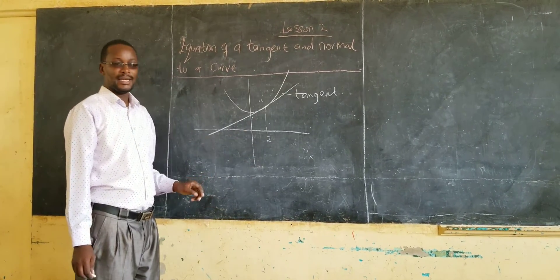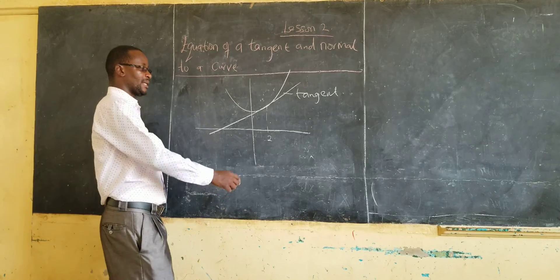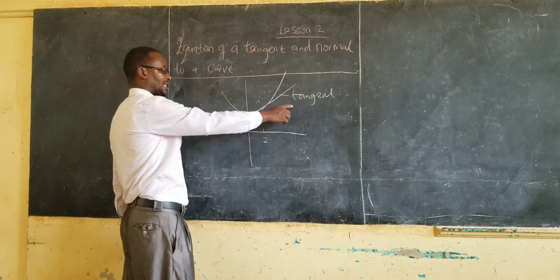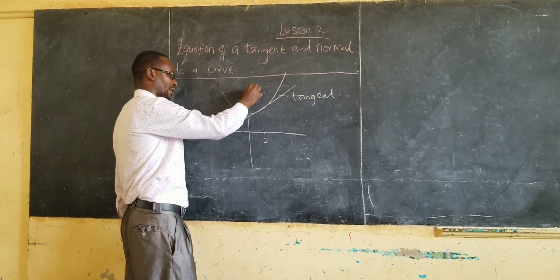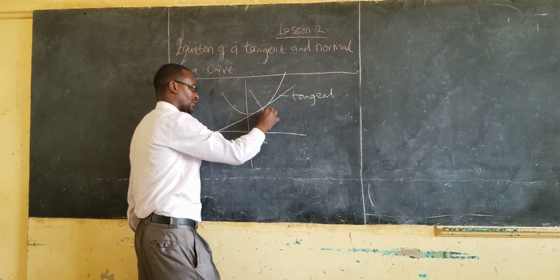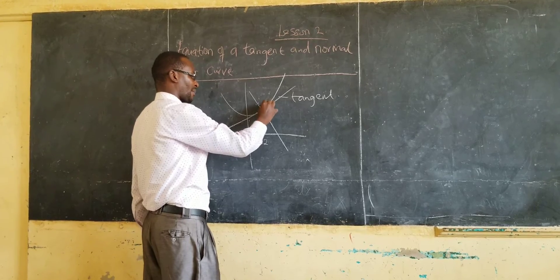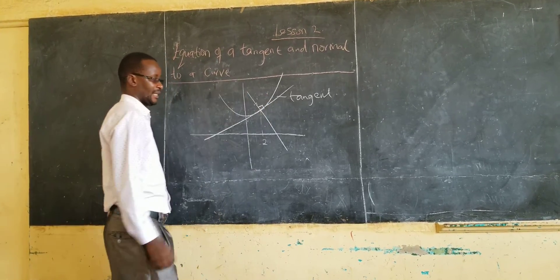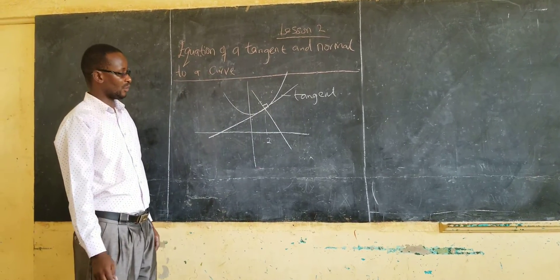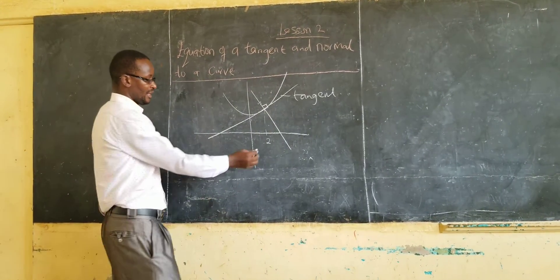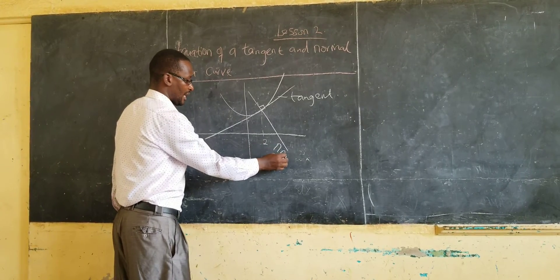A normal is a line which is perpendicular to the tangent at that point. So, if you draw a line which is perpendicular to the tangent at the same point x equal to 2, this is the one we call the normal.